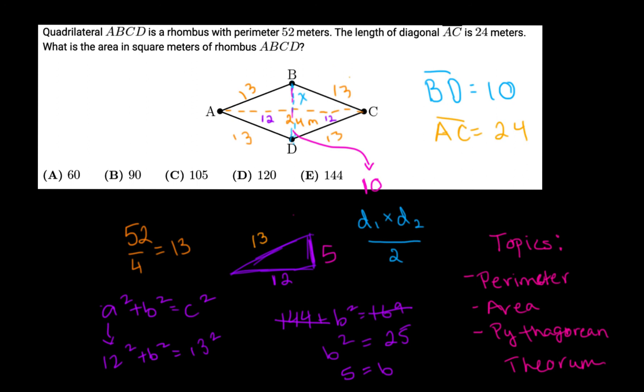So we multiply those two. 24 times 10 is 240. 240 divided by 2 equals 120. That is our final answer. In this AMC8 test, we would circle D.